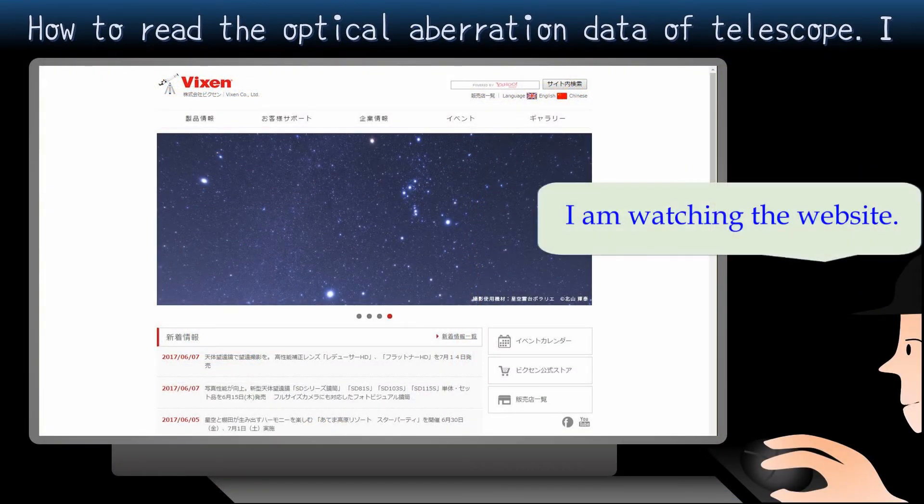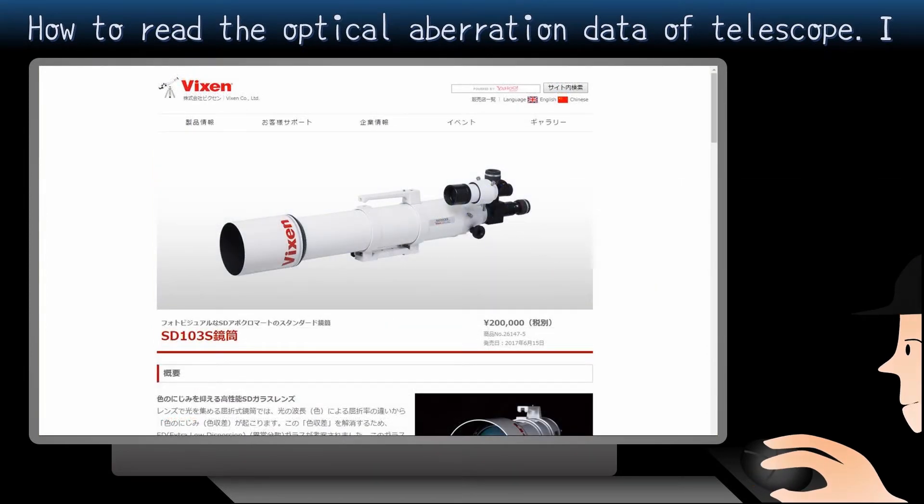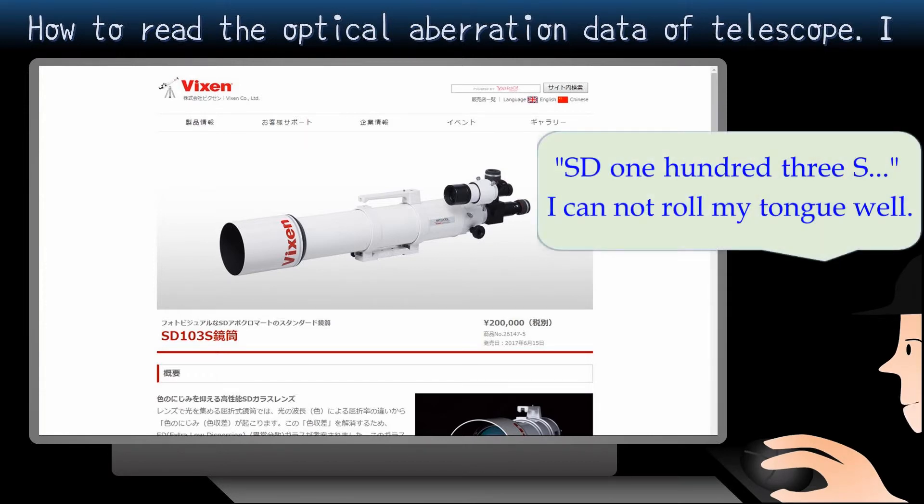Now, I'm watching the website of this telescope that I use for the sample. Its name is SD-103S or SD-103, a reflecting telescope of Vixen. I don't know which way of calling is for foreigners. However, I call it SD-103S in this movie because I cannot roll my tongue when I use SD-103.